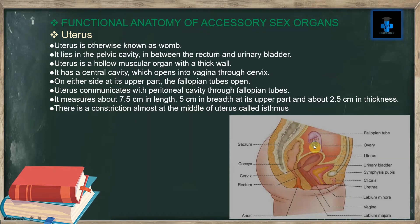The two ovaries and uterus communicate with the peritoneal cavity through the fallopian tubes. The uterus measures about 7.5 centimeters in length, 5 centimeters in breadth at its upper part, and about 2.5 centimeters in thickness. There is a constriction almost at the middle of the uterus called the isthmus.